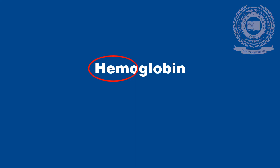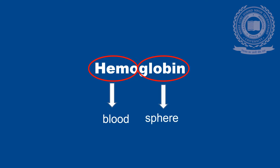Hemoglobin comes from two words: heme and globin. Heme is a Greek word which means blood, and globin is a Latin word which means globus or sphere.